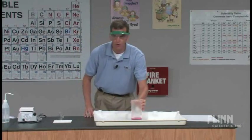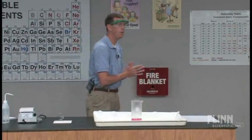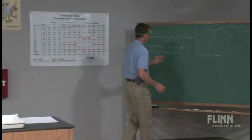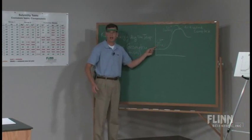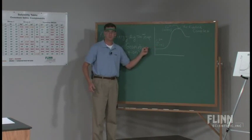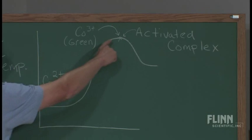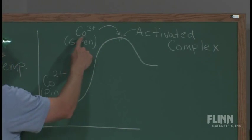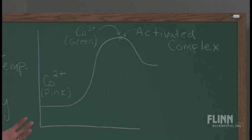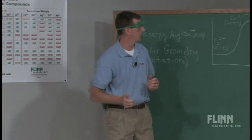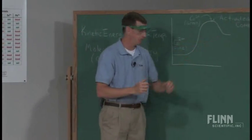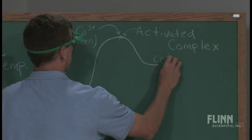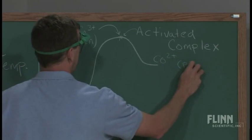The reason for the color change is while we've increased or lowered the activation energy, the cobalt two plus ion is a pink color. As it moves through the activated complex portion of the reaction, the cobalt three plus ion is green. As the electrons are traded and moved and the reaction takes place, then it will come back to the Co2+ which comes back to pink again.